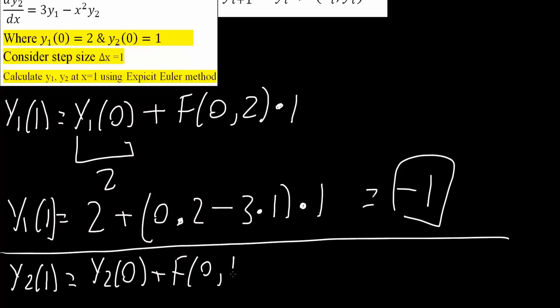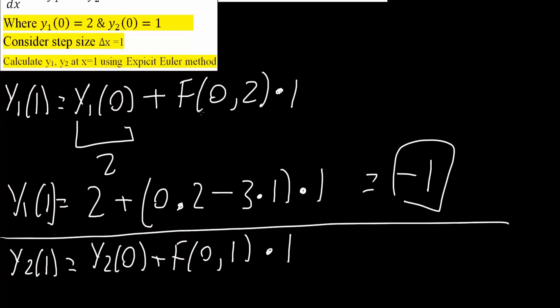So comma 1 times our step size, which is 1. And when y2 is 0, we get 1, so this becomes 1 right here, and 0, comma, 1. So we will plug it back into that equation.